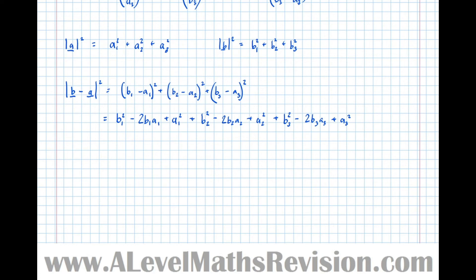And the length of minus A plus B squared, when multiplied out and tidied up, gives: A1 squared plus A2 squared plus A3 squared, plus B1 squared plus B2 squared plus B3 squared, minus 2 lots of (A1B1 plus A2B2 plus A3B3).